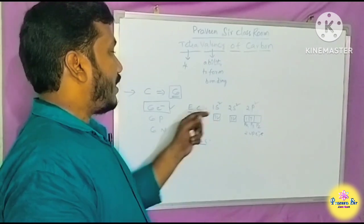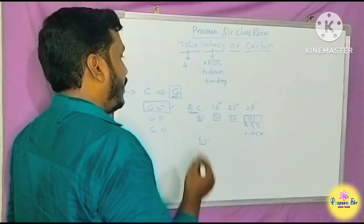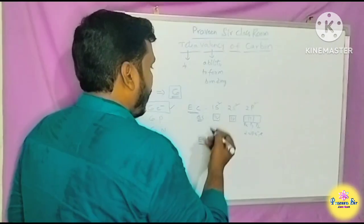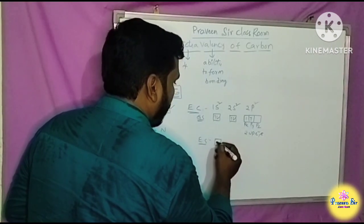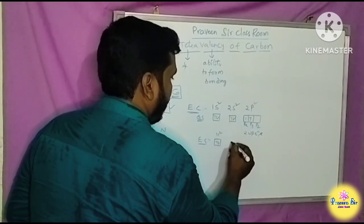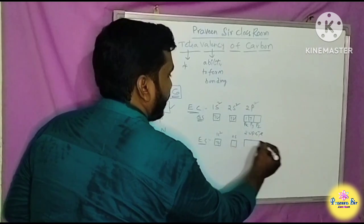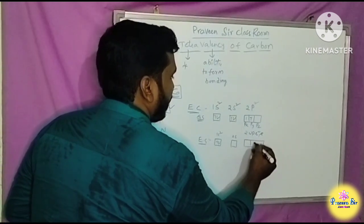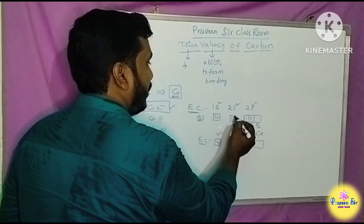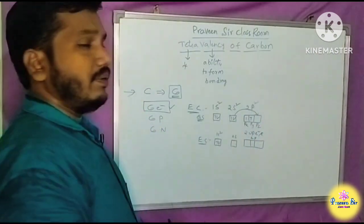Considering low energy level and high energy level, an electron can jump from a lower energy level to a higher energy level. The ground state configuration is 1s² 2s² 2p².